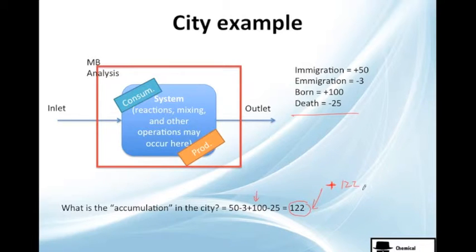Let's say per year. What will happen if, I don't know, it's not that cool, we don't have that much babies born, and we have no immigration. Actually it's a shitty city, we only have emigration and people is dying. We will have 0 minus 3 plus 0 minus 25.